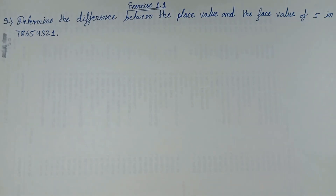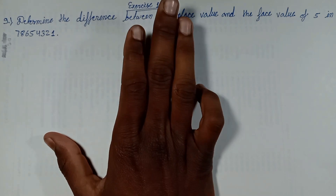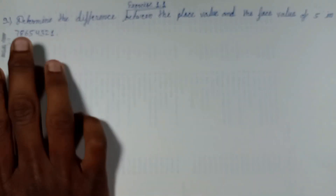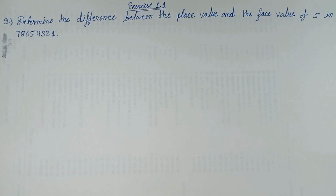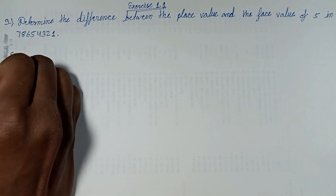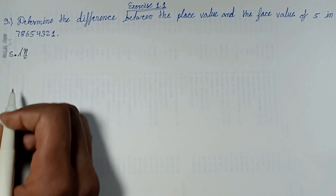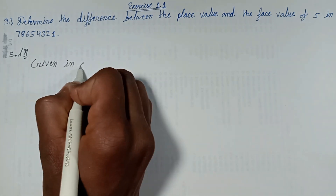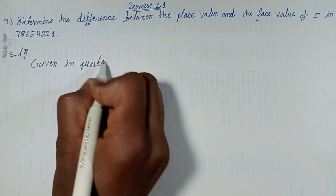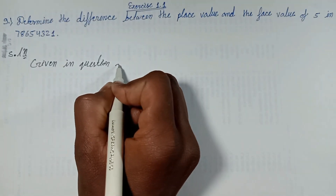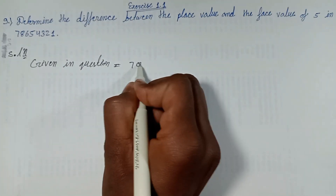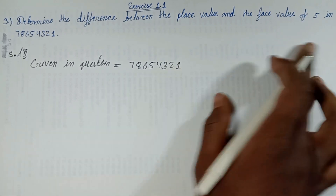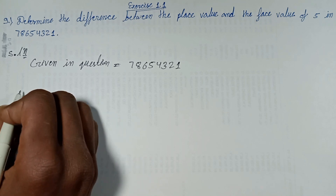Welcome back to a new episode. This episode discusses Exercise 1.1: determine the difference between the place value and face value of 5 in the given numbers. The number given in the question is 78654321.